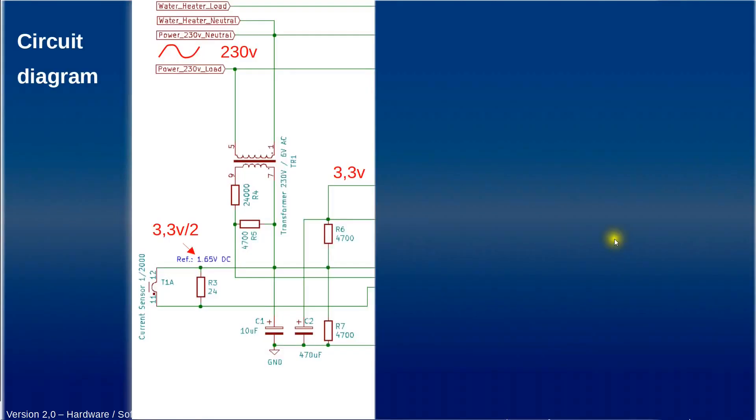if we go deeper in the circuit diagram first we will take the 3.3 volts generated by the board and we divide this 3.3 volt by two using two resistances to generate a voltage at the middle at 1.65 volt DC. Here we have the transformer which will receive the 230 volts transformed to 6 volts